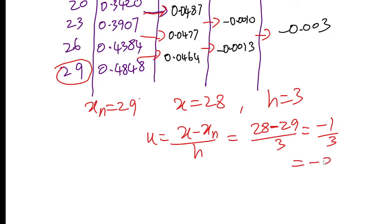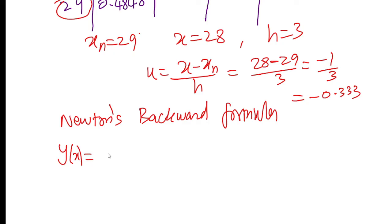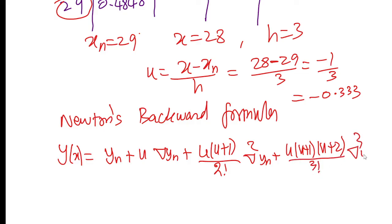The Newton's backward formula, you write the formula. So that is y(x) equal to yn plus u del yn plus u(u+1) over 2 factorial del square yn plus u(u+1)(u+2) over 3 factorial del cube yn.